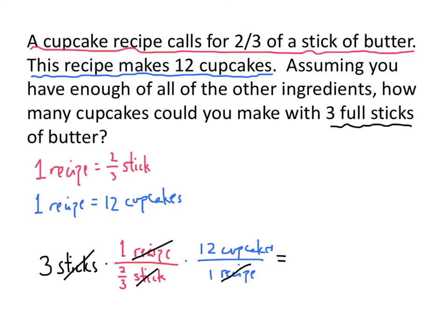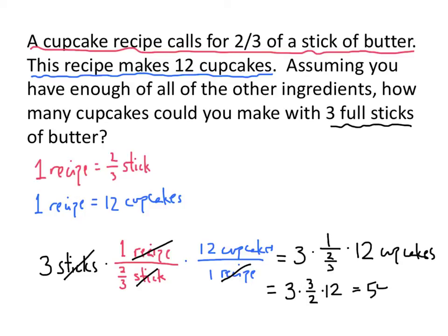So the number we have is 3 times 1 over two-thirds times 12, and that's how many cupcakes we'll end up with. Dividing by two-thirds is the same as multiplying by three-halves, and 3 times three-halves times 12 works out to be 54. So the answer is 54 cupcakes.